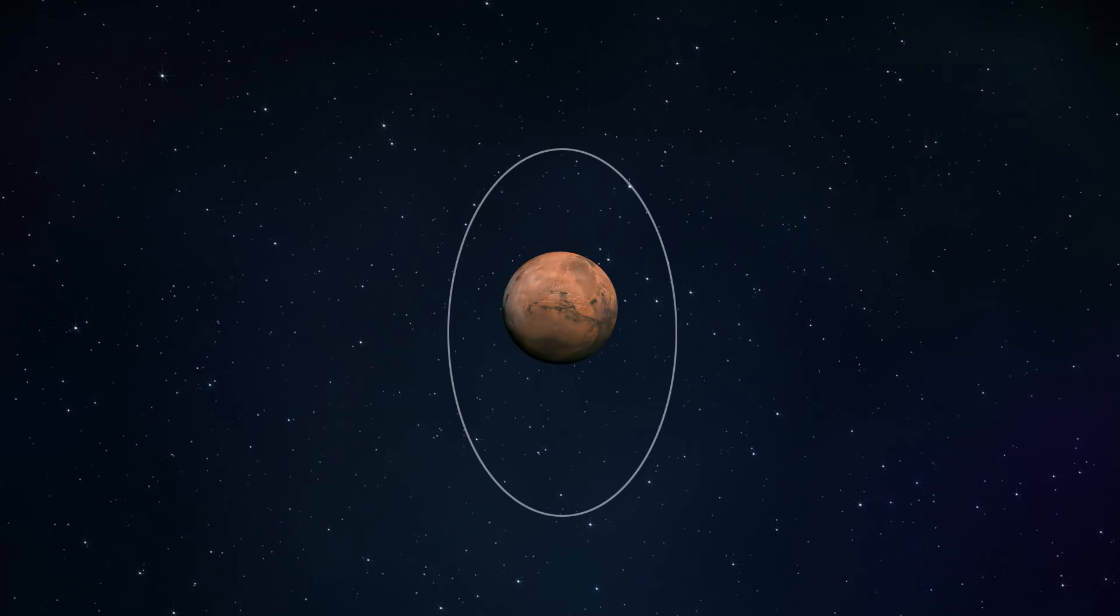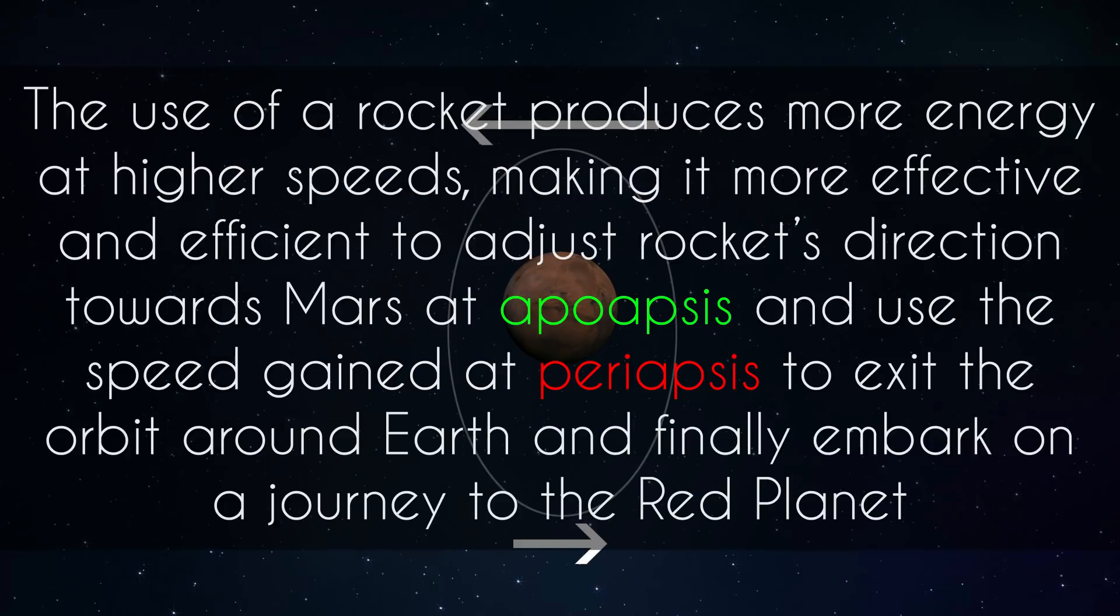In relation to the center of mass, the farthest point of the orbit is called the apoapsis and the nearest is the periapsis. The orbiting body is moving the slowest at apoapsis and fastest at periapsis. Oberth's effect states that the use of a rocket produces more energy at higher speeds, making it more effective and efficient to adjust the rocket's direction towards Mars at apoapsis and use the speed gained at periapsis to exit the orbit around Earth and finally embark on a journey to the red planet.